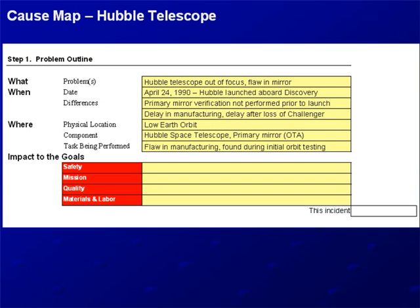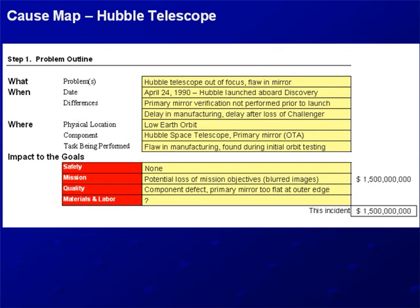Under the goals, the ideal state is to answer none to all of these, but because we have an issue, at least one or more is going to be impacted. In this particular case on the Hubble, no one was injured. The impact of the mission was a potential loss of the overall mission objectives because of the blurred images on a $1.5 billion telescope. Certainly the quality goals were impacted because there's a defective component — the primary mirror is too flat at the outer edges — and there's certainly going to be cost in terms of material and labor for the repair on the first servicing mission.